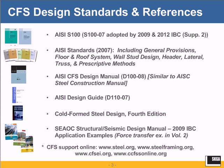The reason I bring up the SEAOC manual is that there is a good force transfer example in volume two in a light frame design example. It's somewhat applicable to cold-formed steel design when you're doing force transfer around an opening in a typical type two shear wall. For cold-formed steel support online, the AISI website is steel.org, the Steel Framing Alliance is steelframing.org, the Cold-Formed Steel Institute is coldformedsteel.org, and there's also CCFSS online — the Center for Cold-Formed Steel Structures — another great reference.